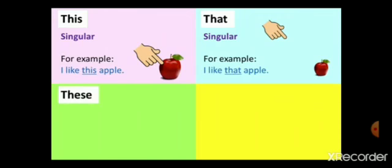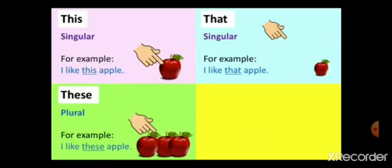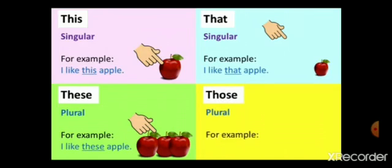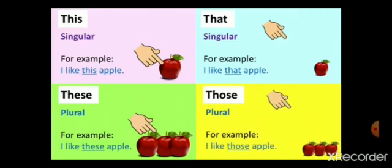Now, when things are close but there are many of them, that is called plural. Then we say 'I like these apples' — many apples, plural form, close to us. And 'those' is used for far away things in plural form. So: 'I like those apples' — the apples are far away and there are many of them, so we write 'I like those apples'.